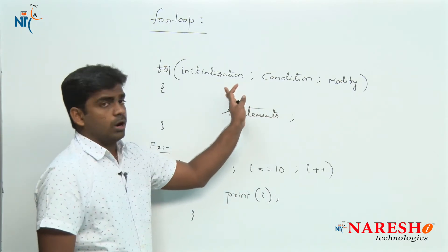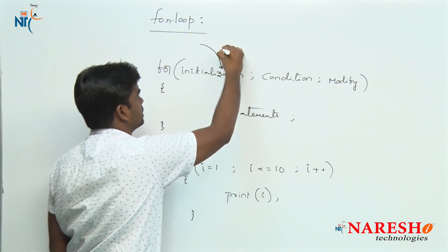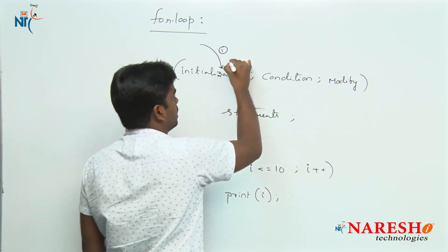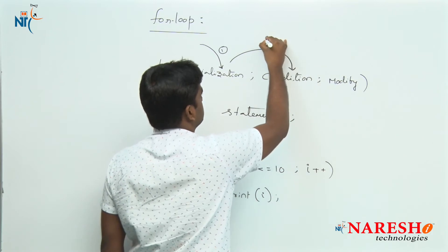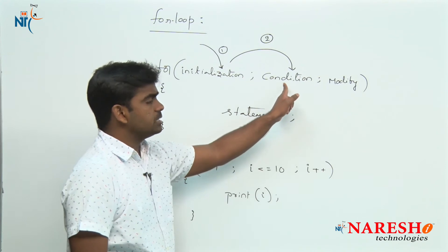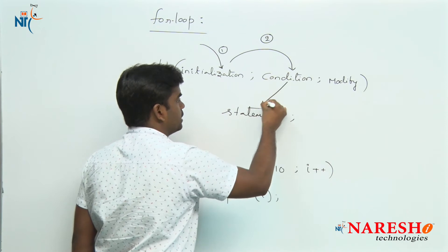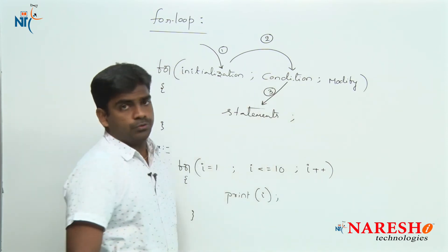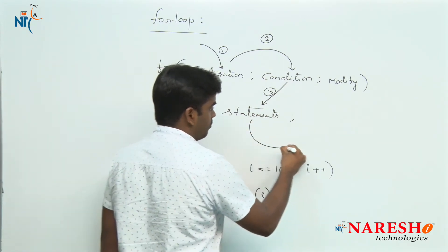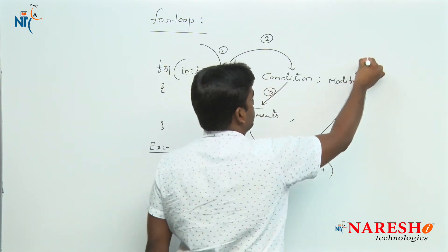Now, what is the flow — how it executes? First it will check the initialization statement. After initialization, it will check the condition. If the condition is true, the control does not go to modify directly — instead it moves inside and executes the statements.